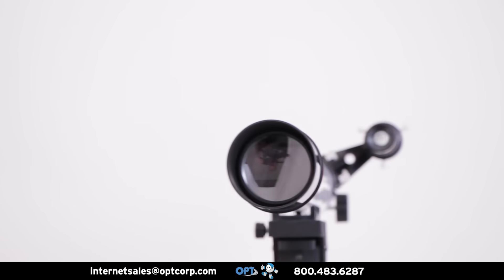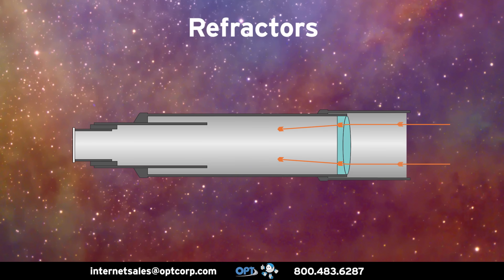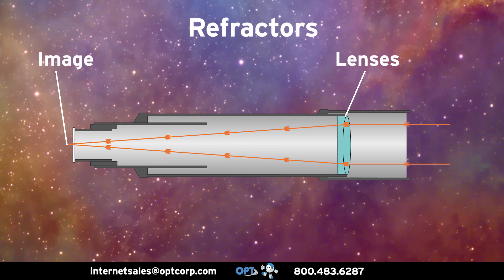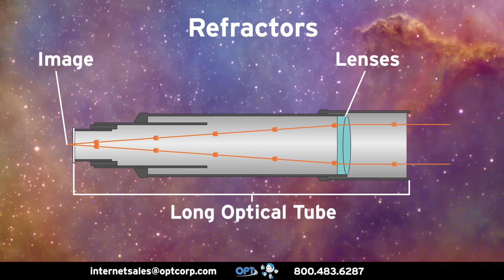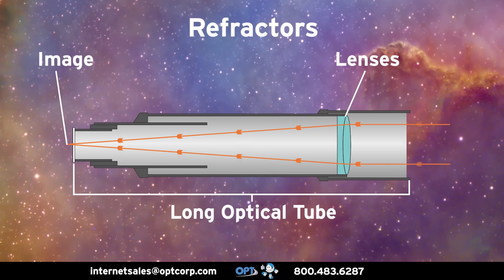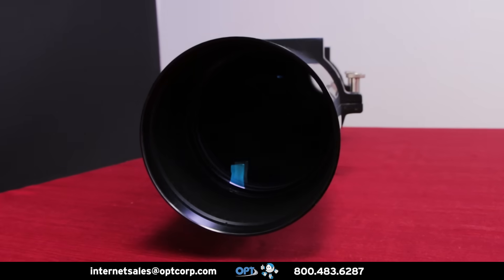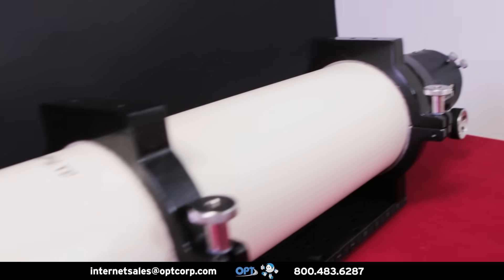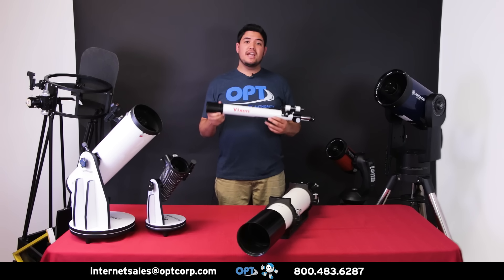Firstly, we'll discuss refracting telescopes. These scopes utilize specifically designed lenses to focus the light into an image. Refractors are usually long relative to their size, as the light must flow in a straight path through the telescope tube to the eyepiece. The larger the lens in a refracting telescope, the longer the optical tube has to be to bring the image into focus. For this reason, refractors tend to be smaller and more portable than other telescope types.